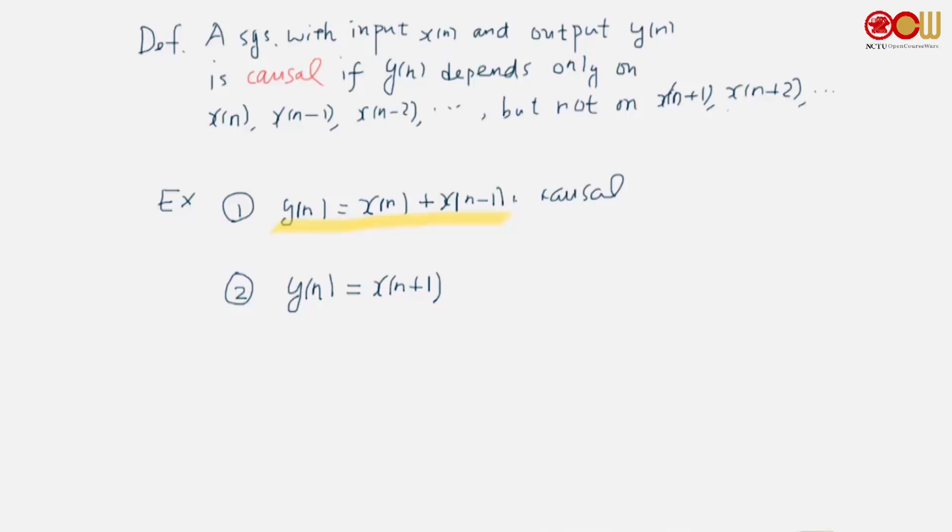How about another example? y(n) = x(n+1). Would this be causal? No, it's not causal because it depends on future samples of x.